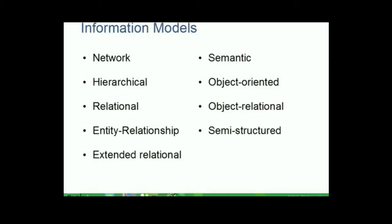Information model proposals can be split into nine historical epochs: Network, Hierarchical, Relational, Entity-Relationship, Extended-Relational, Semantic, Object-Oriented, Object-Relational and Semi-Structured. Let us go over each one of these in the following slides.